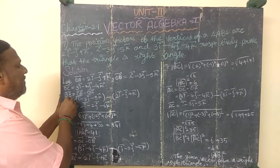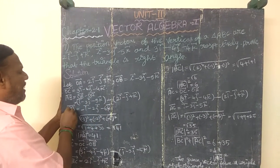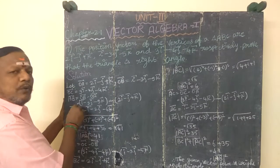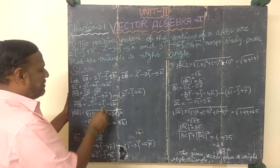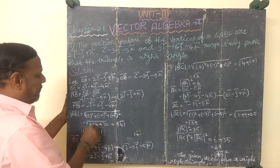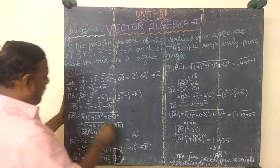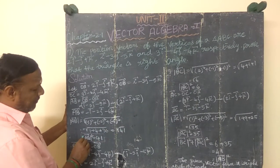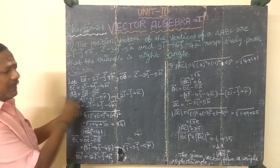Now computing AB vector: AB = OB minus OA, giving minus i minus 2j minus 6k vector. The modulus of AB is the square root of minus 1 squared plus minus 2 squared plus minus 6 squared, which equals square root of 1 plus 4 plus 36, giving modulus of AB equal to square root of 41.